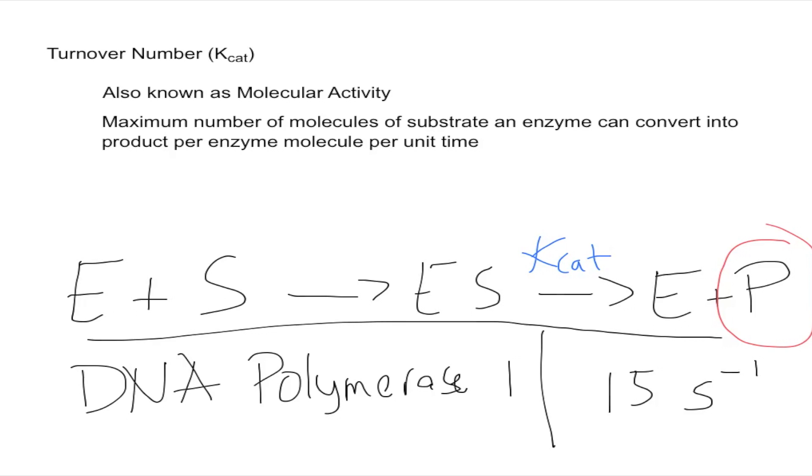The turnover numbers vary drastically. Some could form 40 million, some could form 0.5. It really depends on the enzyme.